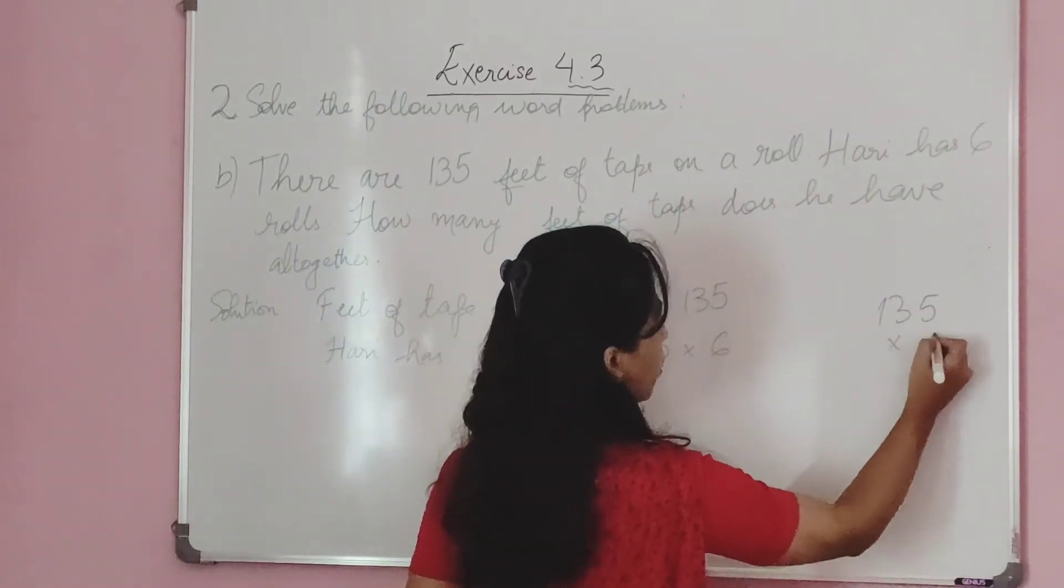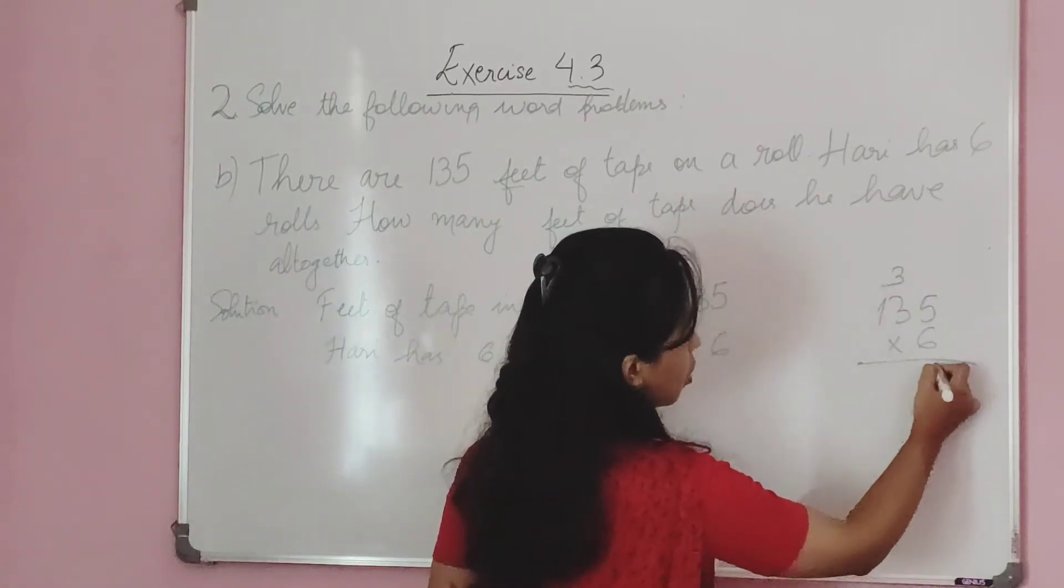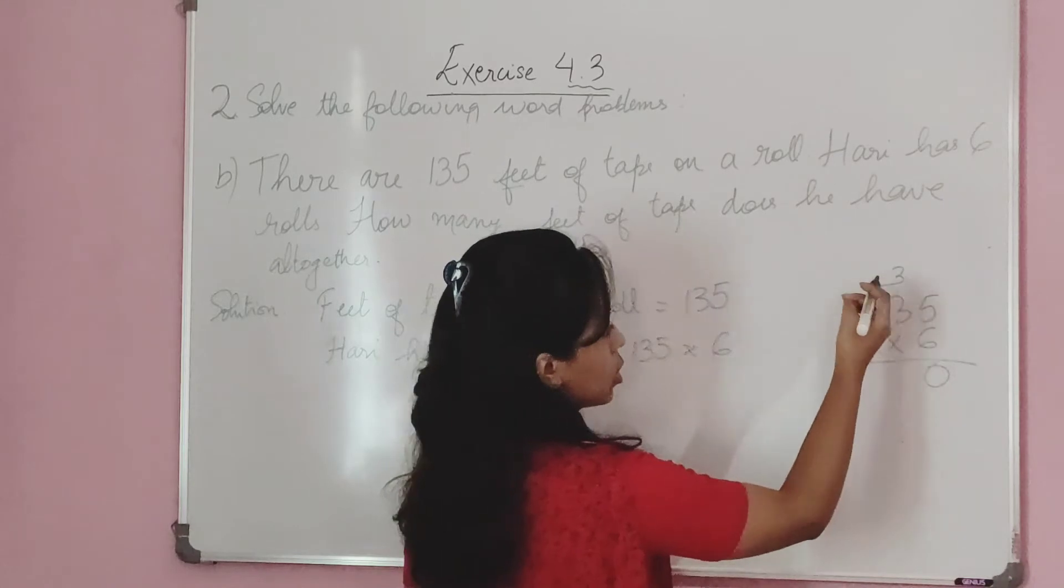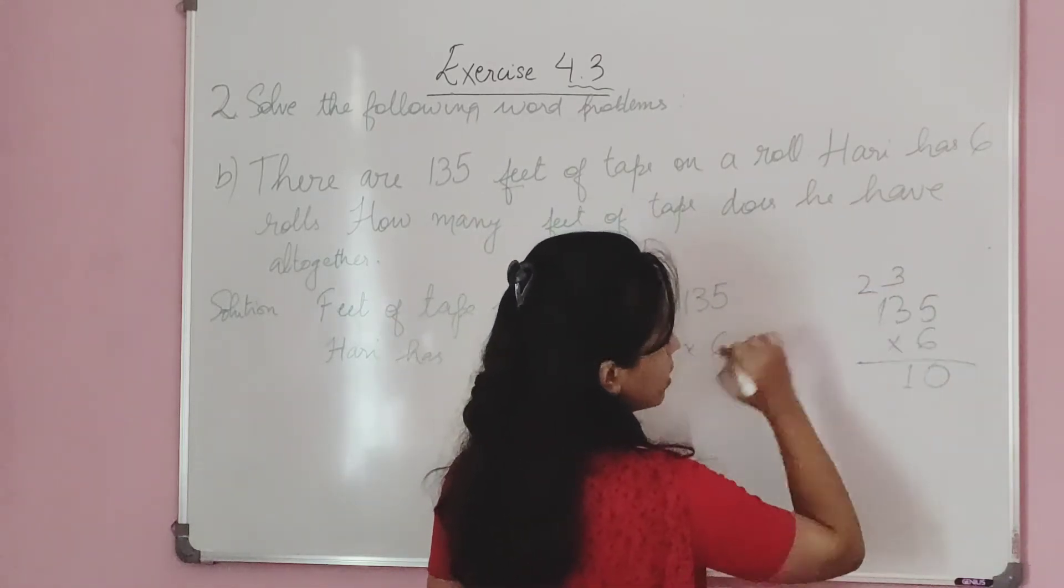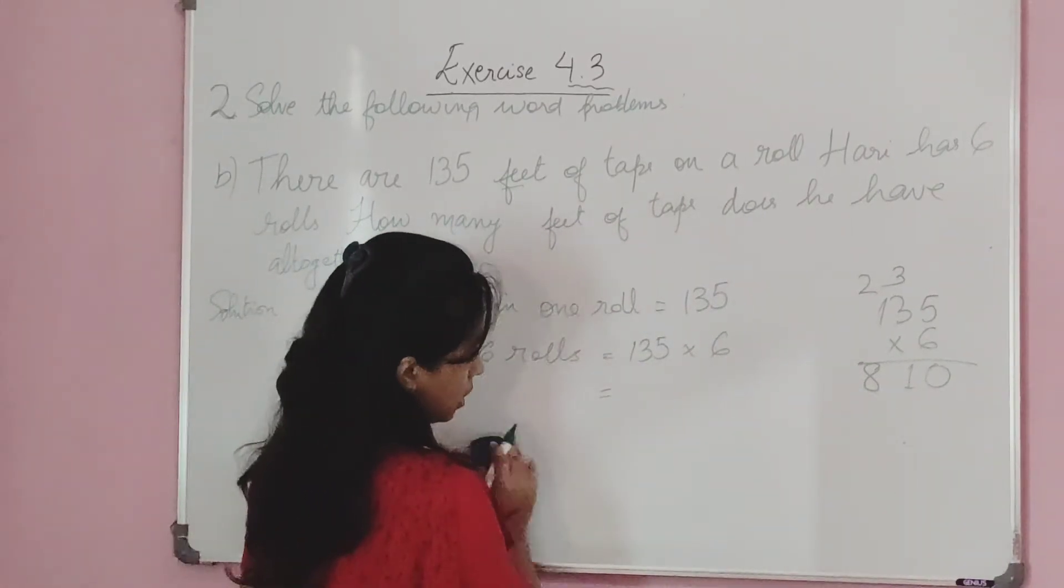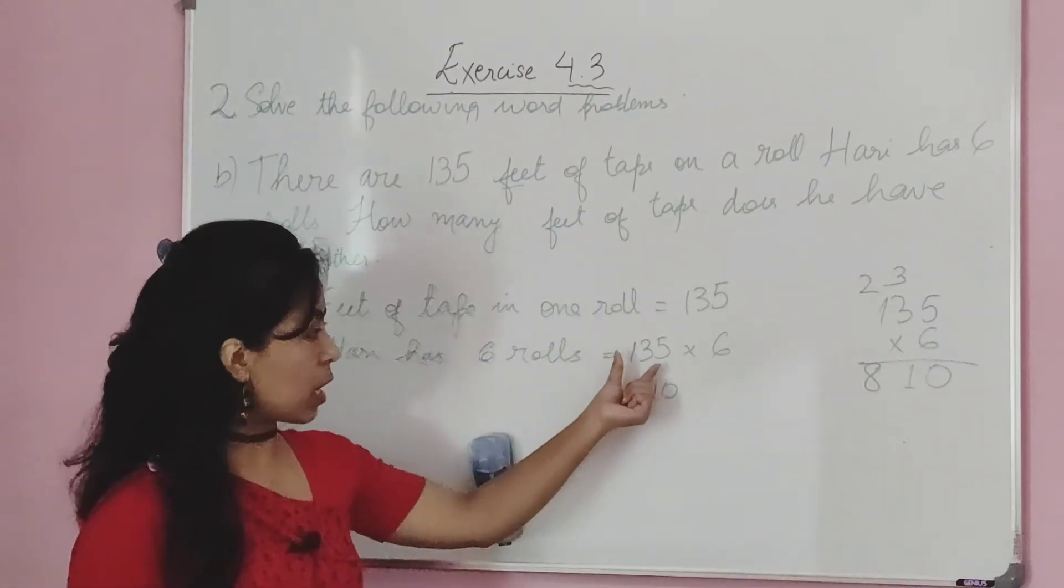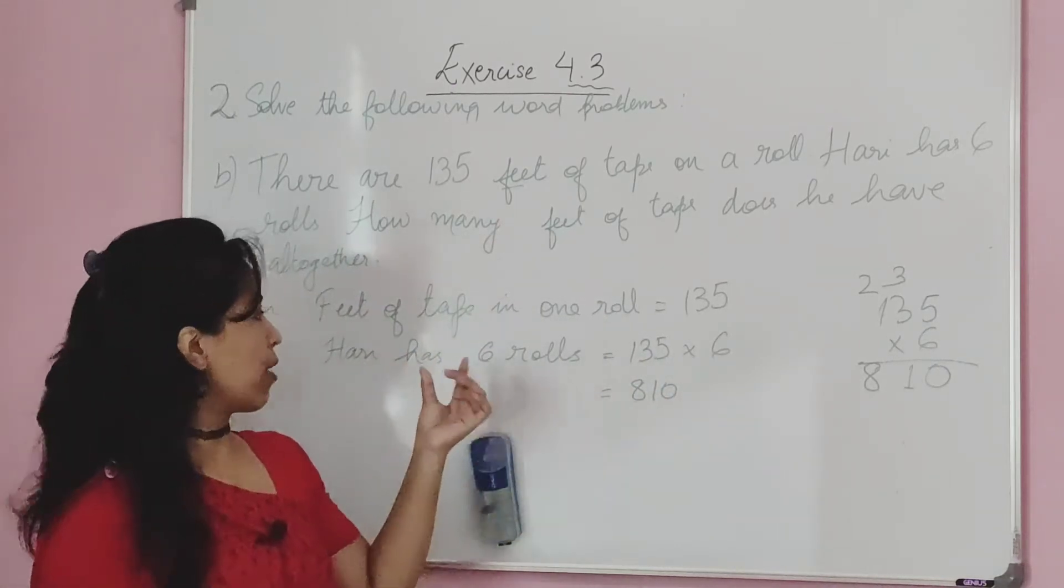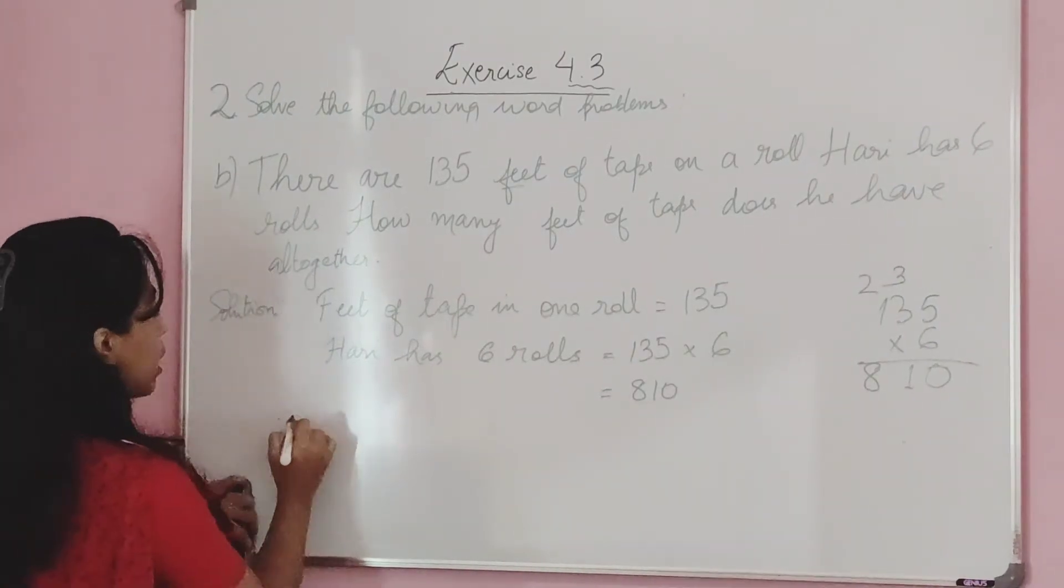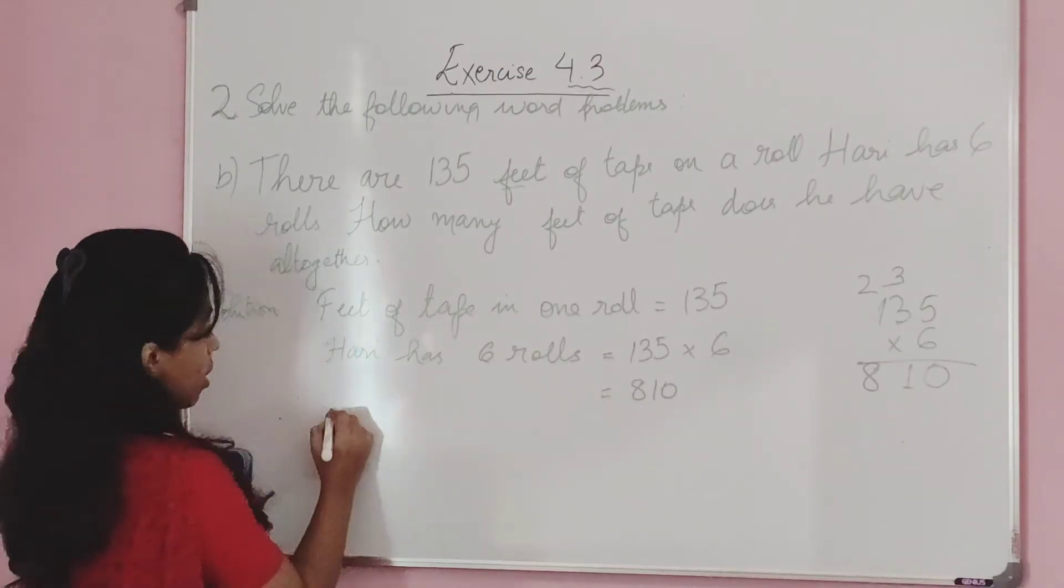Let's multiply: 135 feet per roll times 6 rolls. Working through the calculation step by step. Now let me write this down clearly on the paper.